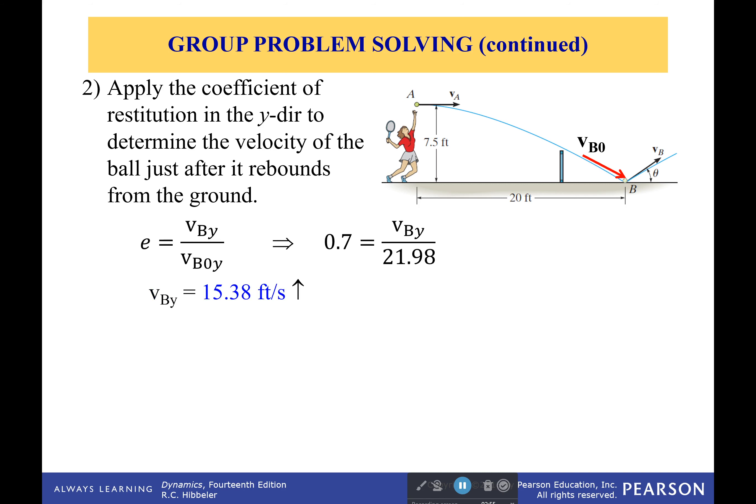So after it rebounds, before it rebounds, we know it's going to be a ratio of 0.7. We know what the velocity of the ball is as it approaches the ground is 21.98 feet per second. And so it's going to rebound with a velocity of 15.38 feet per second.